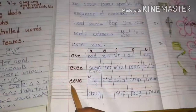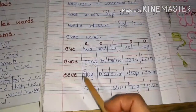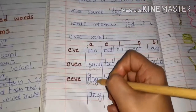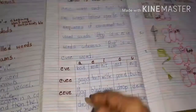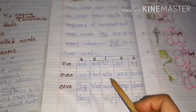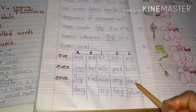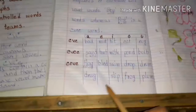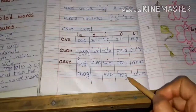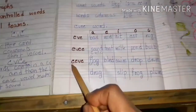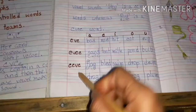The last one is CCVC. CCVC examples: flag, blade, swim, drop, drum, drag, sleep, frog. These are all consonant, consonant, vowel, consonant.